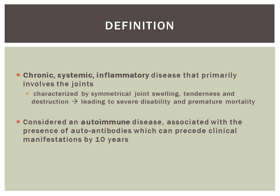The definition of rheumatoid arthritis. The key words in the definition would be that it is a chronic, systemic illness, inflammatory in nature, and primarily involving the joints. It is characterized, quite specifically, by symmetrical joint swelling, tenderness, and subsequently destruction of the joint, leading to severe disability and premature mortality.